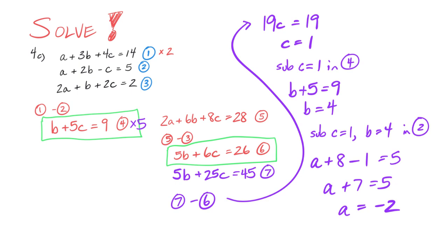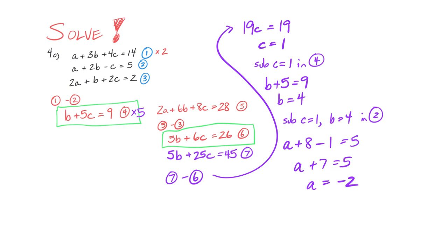Okay, I've solved my system. So the only thing left for me to do is to go ahead and write out my solution. Do not, do not, do not forget to now state it as a point of intersection, a list of coordinates in alphabetical order. So I have my negative 2, then my 4, then my 1. There's my a, my b, and my c, and I am good.